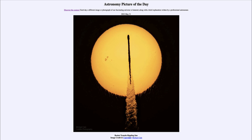The rocket's heat plume and exhaust trail distort the atmosphere enough to cause the sun to appear distorted as well. So that was our picture of the day for May 31st of 2022, titled 'Rocket Transits Rippling Sun.' We'll be back again tomorrow for the next picture — until then, have a great day everyone, and I will see you in class.